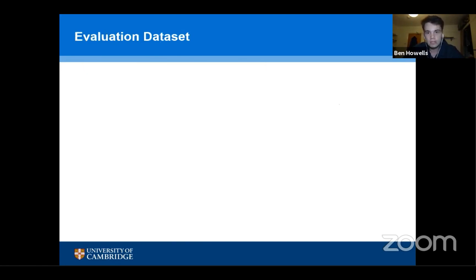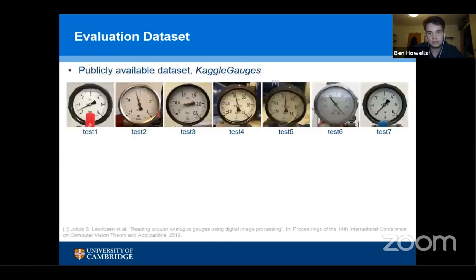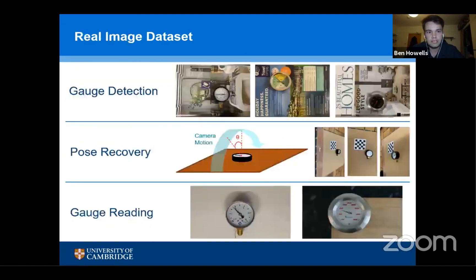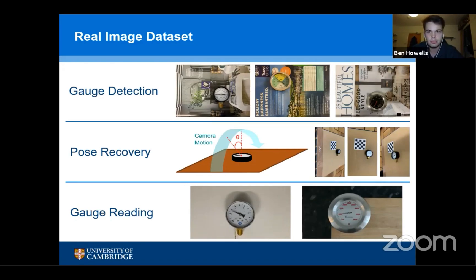To evaluate our system we used real image datasets. Alongside a publicly available dataset consisting of seven gauges, we also produced our own, which could be split into three evaluation tasks: gauge detection, comprising gauges on various different backgrounds; pose recovery, to measure read error sensitivity as a function of camera angle; and gauge reading, to measure read error.